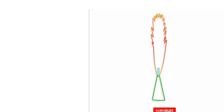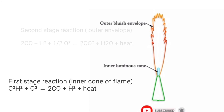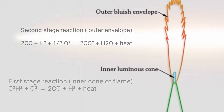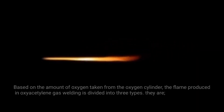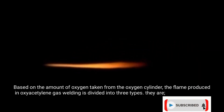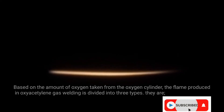There are two stage reactions of acetylene and oxygen: the first stage reaction occurs in the cone of the flame, and the second stage reaction occurs in the outer envelope. Based on the amount of oxygen taken from the oxygen cylinder, the flame produced in oxy-acetylene gas welding is divided into three types.